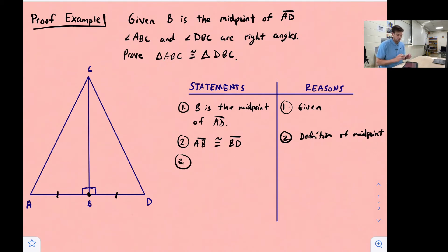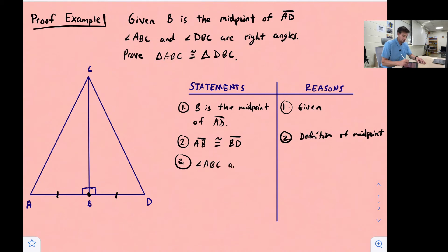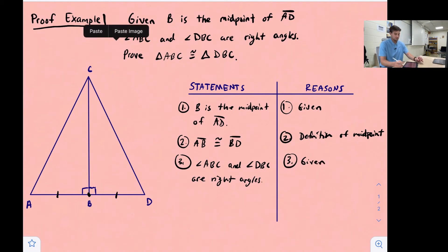Now let's look at the angles given to us. Statement three: angle ABC and angle DBC are right angles. That was given to us in the problem wording and also shown in our diagram with the right angle boxes.